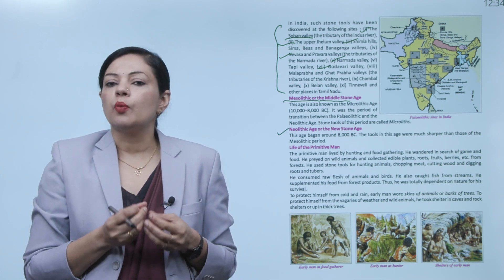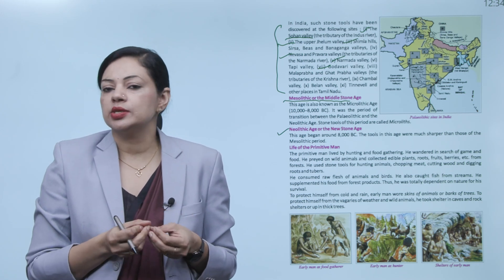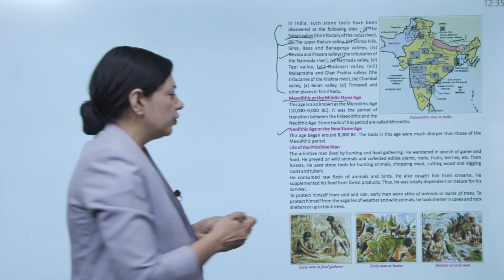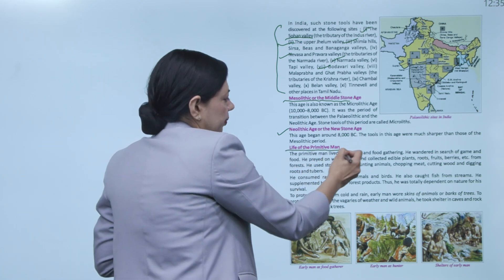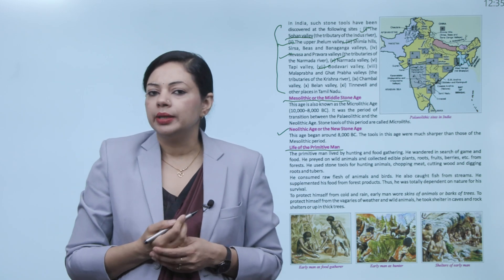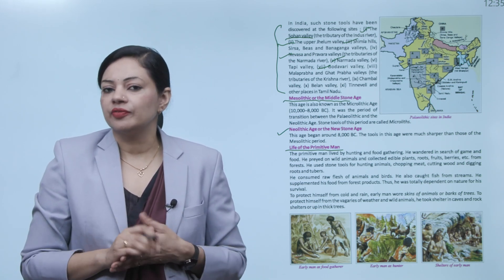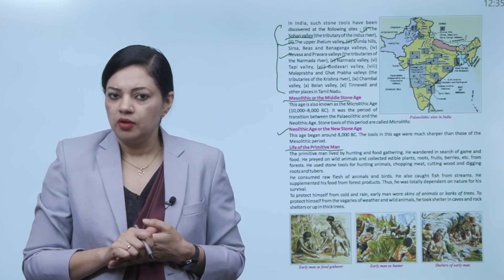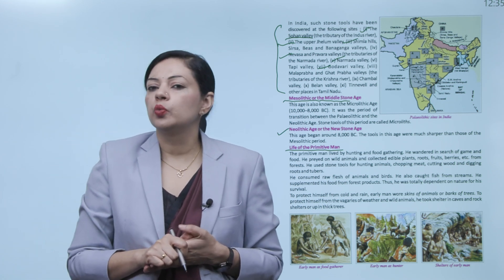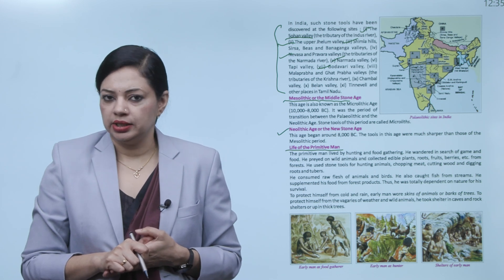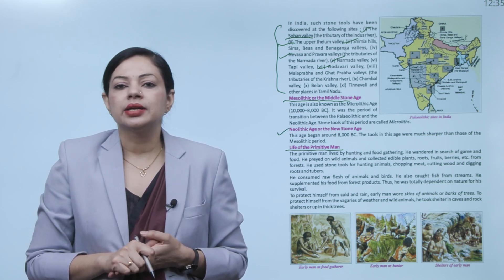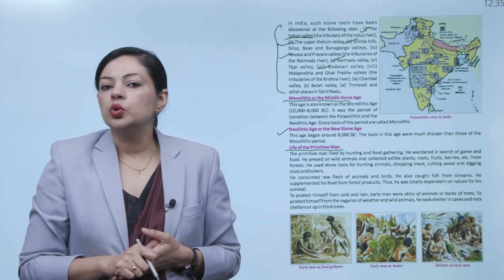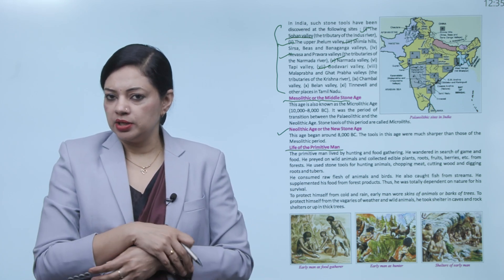That is, it began around 8,000 BC and the tools in this age were much sharper than those of the Mesolithic age. Human beings' skills and knowledge had developed more. Now their tools had become even sharper. Now hunting became easier for them. And along with stone they also started using metal. Now we will discuss the life of the primitive man. The early human beings, the primitive man, the early people, early human beings, what was their life like?